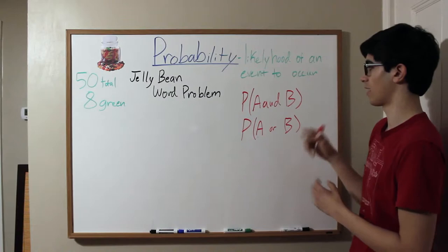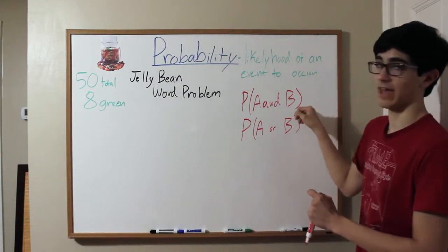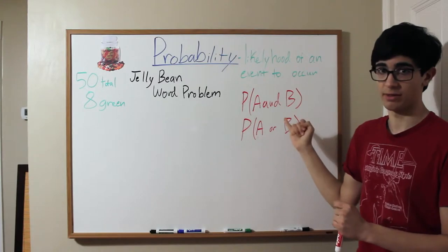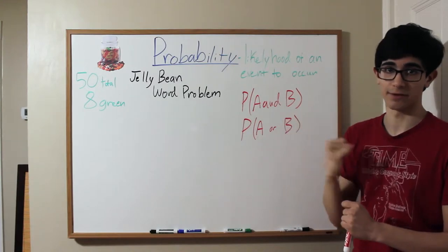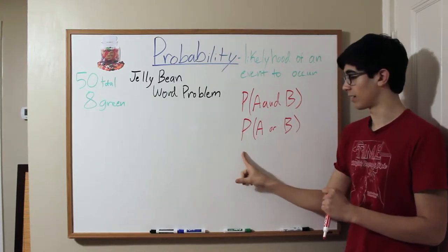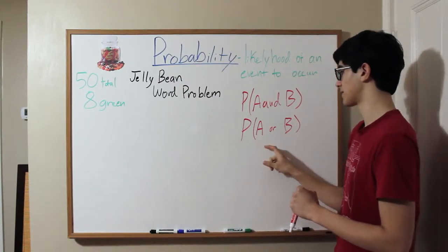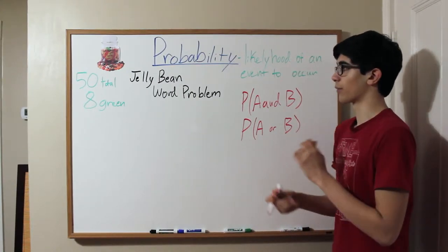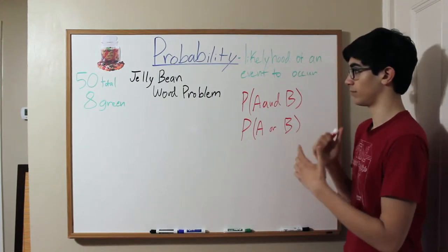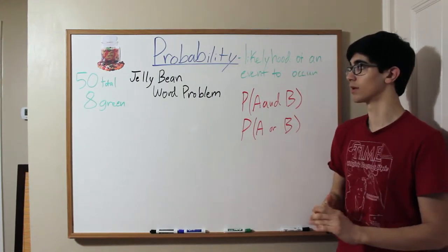Now these are essentially different, both in the form that they use, because the probability of A and B is the probability of A times the probability of B, as I explained in my other video, and the probability of A or B is the probability of A plus the probability of B. Now we're going to talk about how we can learn to differentiate between the two and discern which one we have to use.